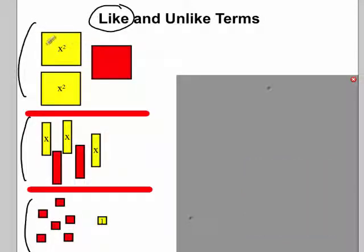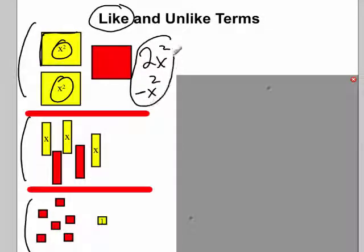In the first one I have x by x squares, which are, remember we call those x squareds. I have two positive x squareds and one negative. Red is negative, yellow is positive. These are what we call like terms. They're tiles that have the same shape. And you'll notice that algebraically we have the same variable with the same exponent. So those are like terms.